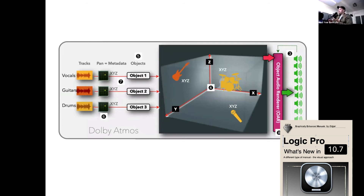In Dolby Atmos, that is thrown out the window. We can now take what they call an object-based track — and you not only have the X plane or the Y plane, but you have a Z plane. So front to back, up and down, and left and right. You're literally in a space. You can automate this as well — if you have a nice riser and you want it to go around you, sky's the limit.